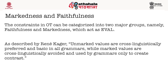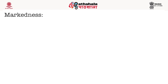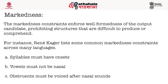Markedness constraints are well-formedness constraints that give rise to unmarked values, whereas faithfulness constraints maintain lexical contrast. Markedness constraints enforce well-formedness of the output candidate, prohibiting structures that are difficult to produce or comprehend. For instance, Kager lists some common markedness constraints across many languages: (a) syllables must have onsets, (b) vowels must not be nasal, and (c) obstruents must be voiced after nasal sounds.